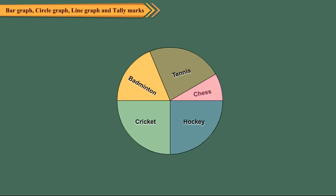Chess is played by least number of students. Hockey and cricket are played by equal number of students. Also, these two games are played by half of the students. The three games, badminton, tennis and chess, are played by half of the students.